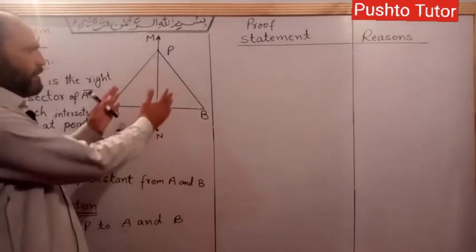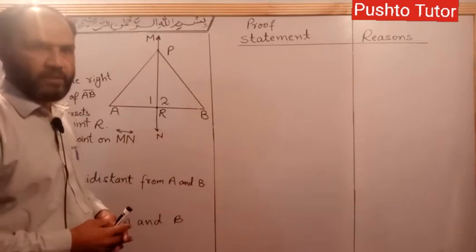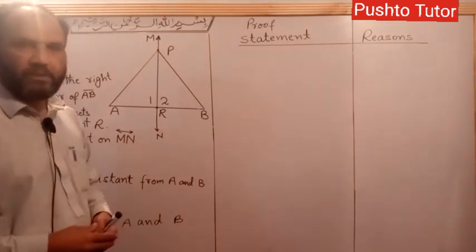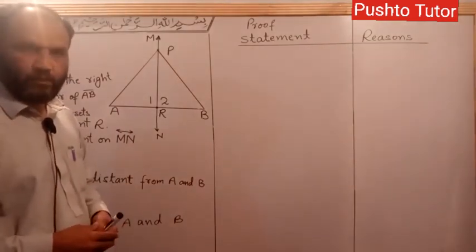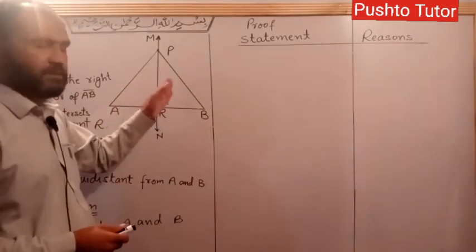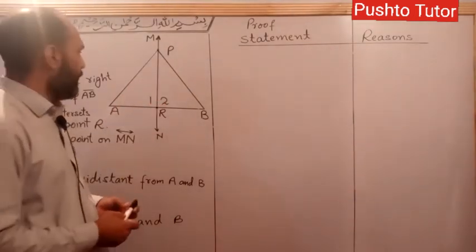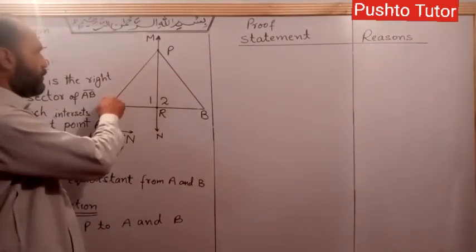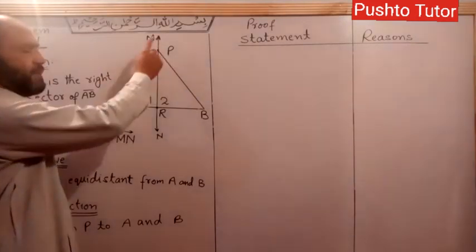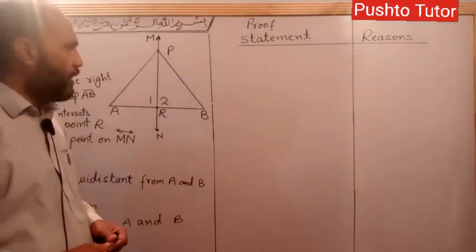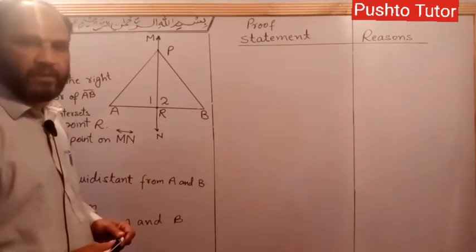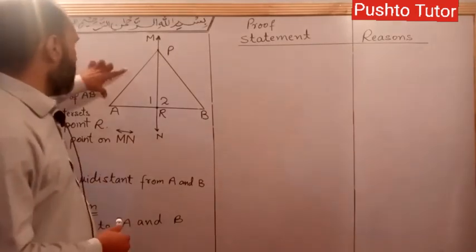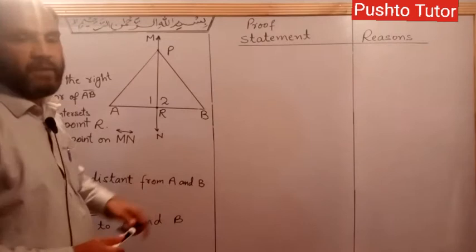The two triangles are congruent. When the two triangles are congruent, the elements of one triangle are equal to the other. If the two triangles are congruent, then AP and BP are corresponding sides of the two triangles, and they are congruent.